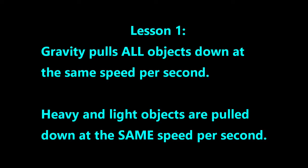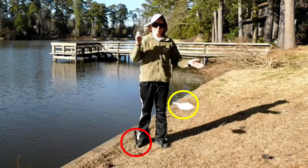This teaches us our first lesson about gravity: gravity pulls all objects down at the same speed per second. That means heavy and light objects are pulled down at the same speed per second. But if gravity pulls all objects down at the same speed per second, then why did the feather fall slower than the hammer did?